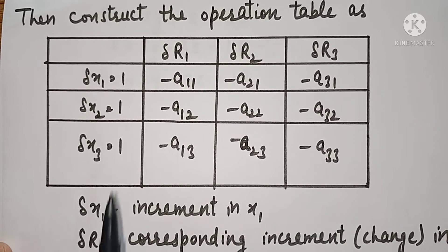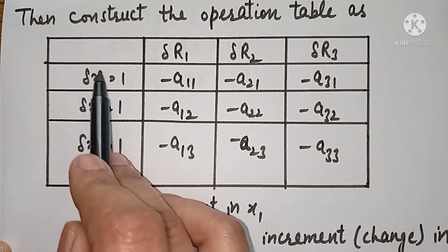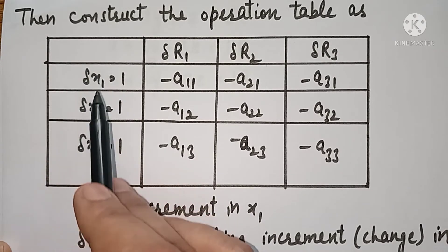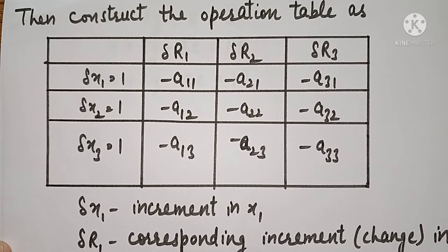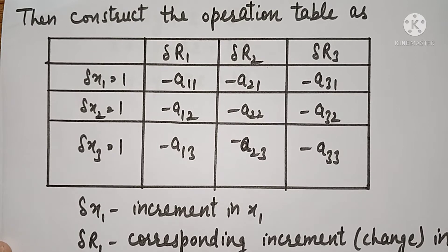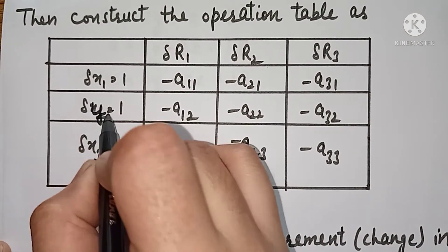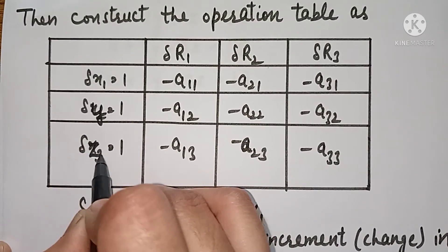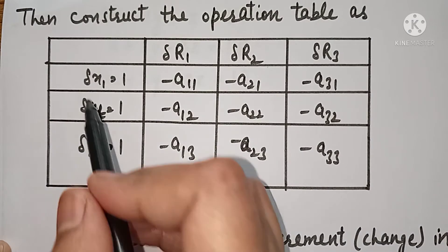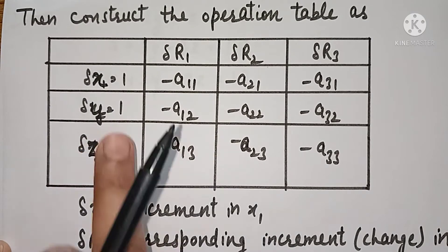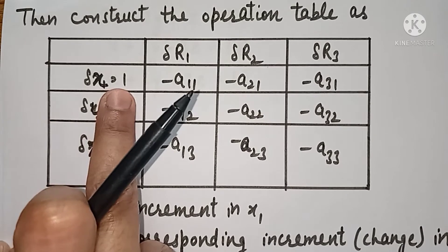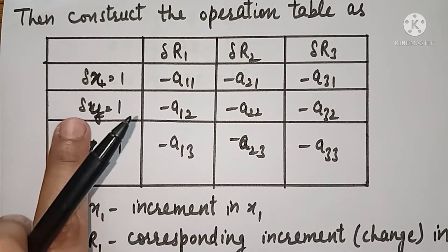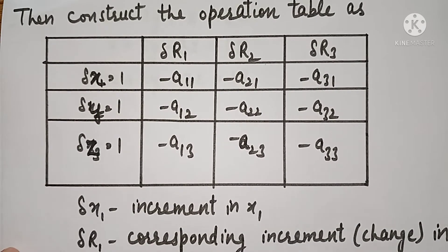सबसे पहले notations देख लेते हैं। del x1 जो होता है वो x के अंदर जो आप increment देते हैं। यहाँ हमने x, y और z variables यूज़ किये हैं तो यह आपके increments हो जाएंगे। del x, increment होता है x के अंदर; del y होता है increment, change in y; और del z denote करता है increment और change in z.